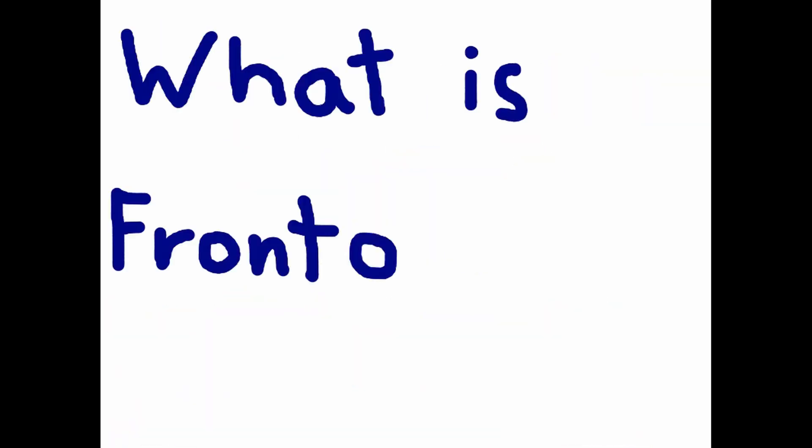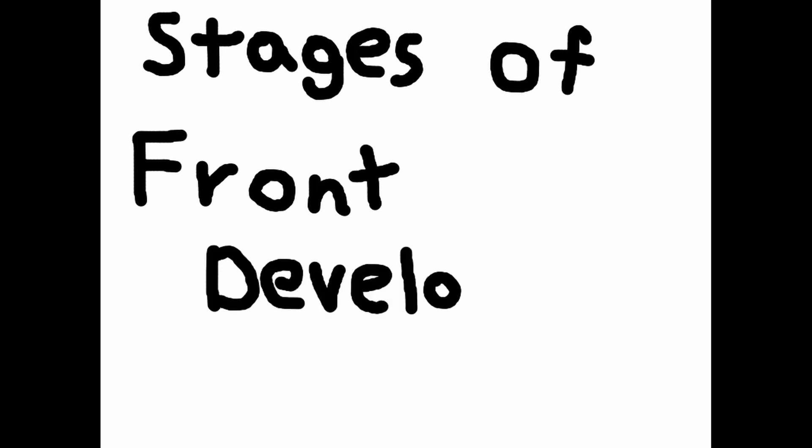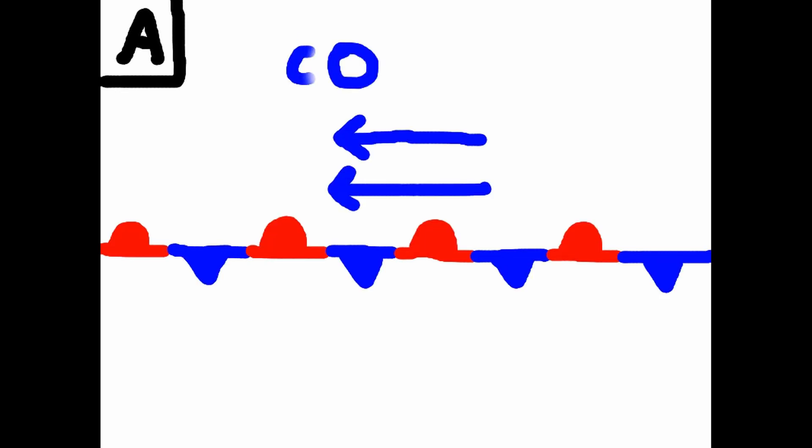What is frontogenesis? Frontogenesis is the generation or intensification of a front. It occurs when warm air converges onto colder air and the horizontal temperature gradient amplifies by at least an order of magnitude.